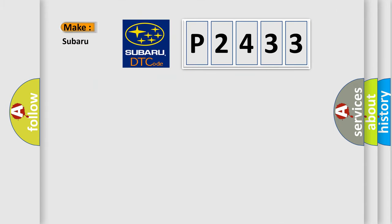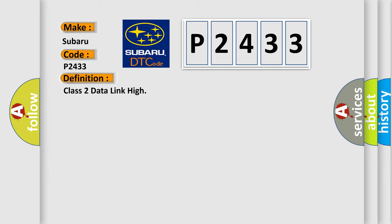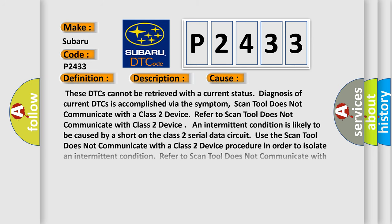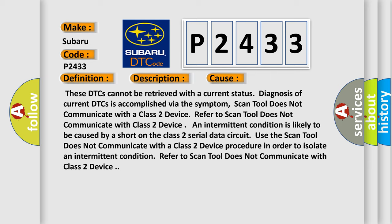So, what does the diagnostic trouble code P2433 interpret specifically? For Subaru and other car manufacturers, the basic definition is Class 2 data link high. Voltage supplied to the module is in the normal operating voltage range. The vehicle power mode requires serial data communication to occur. This diagnostic error occurs most often in these cases: these DTCs cannot be retrieved with a current status diagnosis; the scan tool does not communicate with a Class 2 device. An intermittent condition is likely caused by a short on the Class 2 serial data circuit. Refer to scan tool does not communicate with a Class 2 device procedure.